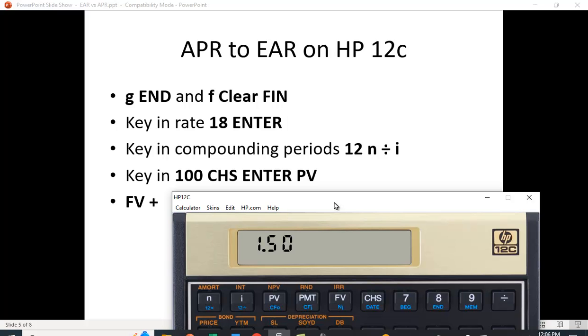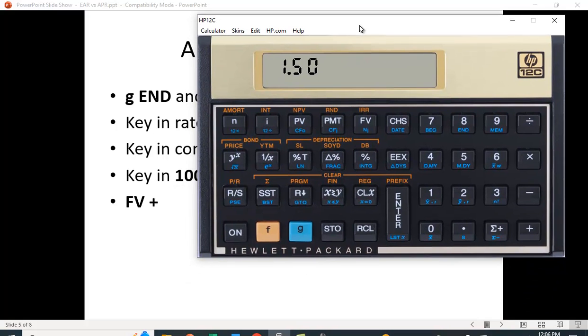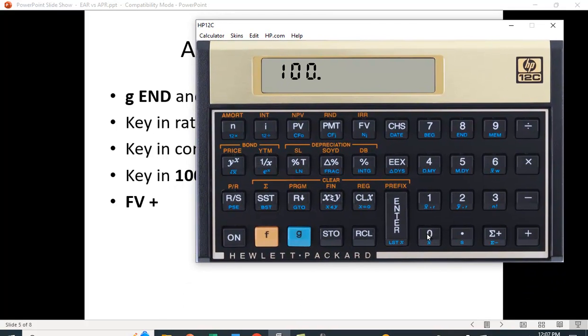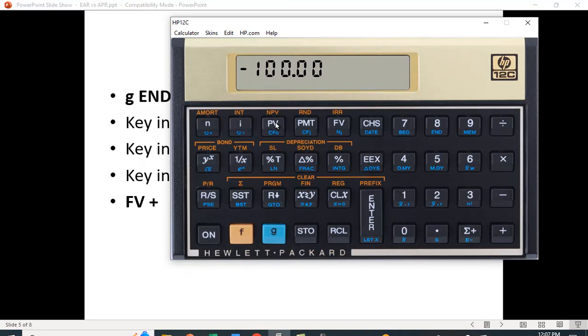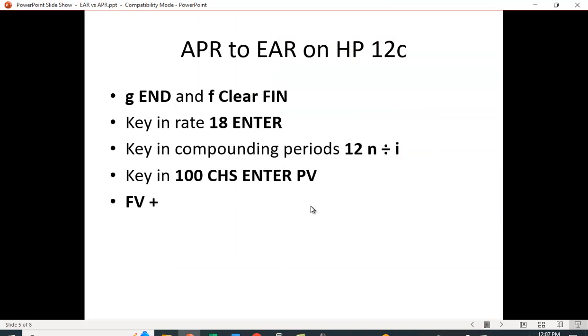And then the last functions are 100, change sign, ENTER, PV. A lot of things to remember here. 100 CHS change the sign, let me make sure I get this right, ENTER and then PV, and then we're going to hit FV and plus, and there's our 19.56%. So I don't know if that's an easier thing to remember than the formula, but that's the keystroking for going from the APR to the EAR to the effective rate.